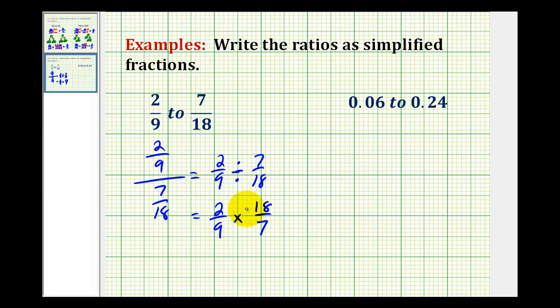Now before we multiply, we should simplify by identifying any common factors between any numerator and any denominator. Notice here that 9 and 18 have a common factor of 9. So there's one 9 in 9, and there's two 9s in 18.